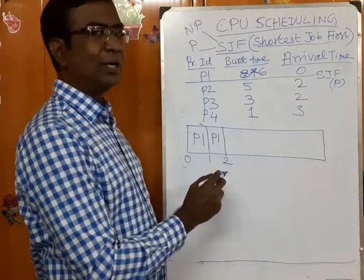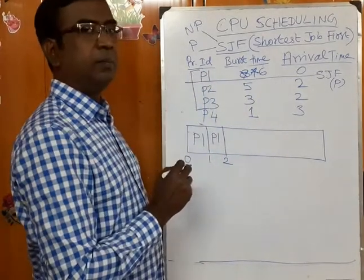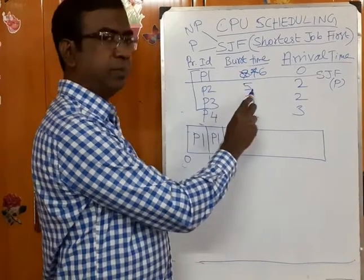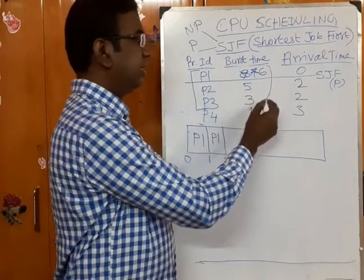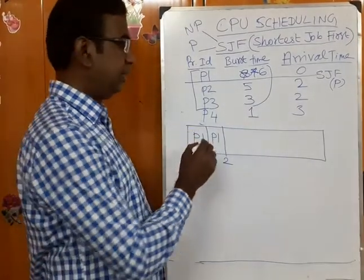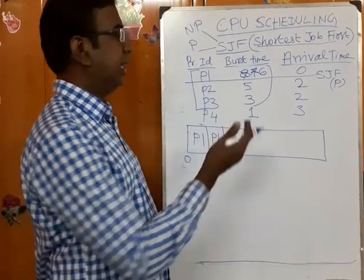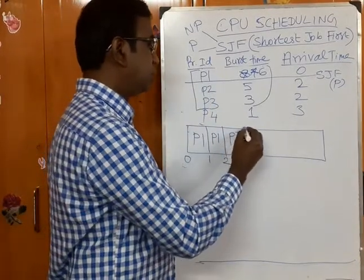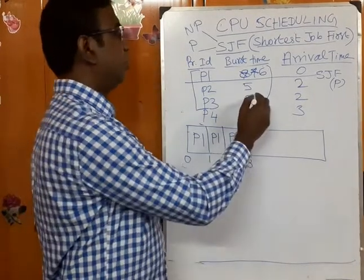After two seconds, how many jobs are there? Now P1 (leftover CPU burst time 6), P2 (total burst time 5), and P3 (total burst time 3) are present. Among these three, P3 is the smallest. So P1 gets suspended and moved to the wait queue, and P3 enters the CPU. P3 executes for one second — leftover becomes 2 at time 3.